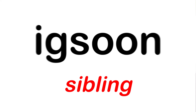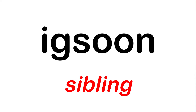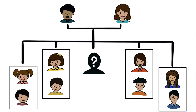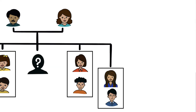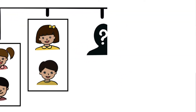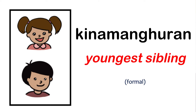For the purpose of this video, let's assume you have four siblings. The general word for sibling in Bisaya is iksu'un. Looking at the family tree, let's start from the youngest sibling on the left side. The general term for the youngest sibling is kinamang huran.